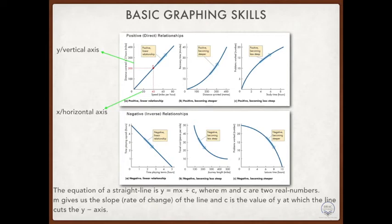Now let's begin from the top left, graph number A, which shows a positive linear relationship — that is, a straight curve. Here the equation of a straight line is y = mx + c, where m and c are two real numbers. m gives us the slope, which tells us the rate of change of y due to a change in x, and c is the value of y at which the line cuts the y-axis.